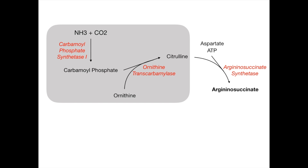Argininosuccinate will go on to form arginine, and in the process it will spit off fumarate as a byproduct. The enzyme that catalyzes this conversion is argininosuccinase. When there's an enzyme that ends in '-ase' but it's one word and not 'synthetase,' it means whatever's in front of it is being broken down. So argininosuccinate goes through argininosuccinase — it's breaking down argininosuccinate and forming arginine.